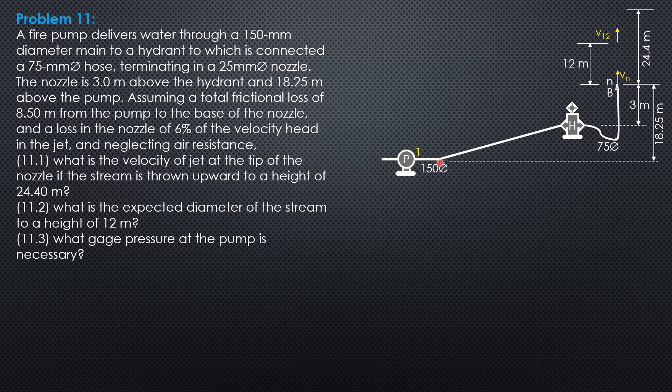So this is the situation. Everything is leveled here. And we have the jet which rises to a height of 24.4 meters. For the first question, velocity of jet at the tip of the nozzle, we know that the velocity head at the tip of the nozzle is simply 24.4, and it is V sub n squared over 2g. H is V sub n squared over 2g from the preceding problem.